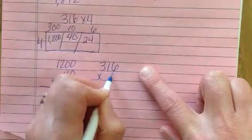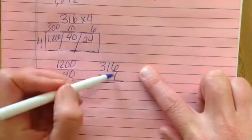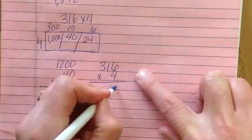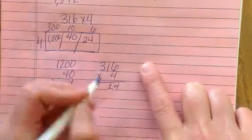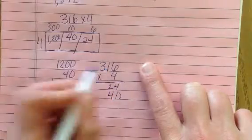Let's try the partial products method. 316 times 4. 4 times 6 is 24. Remember, this is 4 times 10 is 40, because we only have 1 ten.